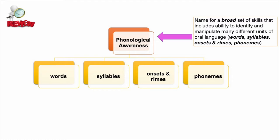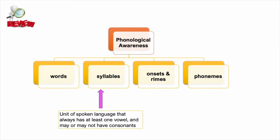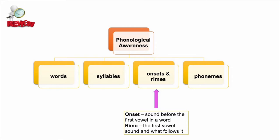Those units are words, syllables, onsets and rimes, and phonemes. A syllable always has at least one vowel and may or may not contain consonants also. Onset is the sound that comes before the first vowel in a word. In the word bat, the b sound is the onset. Rhyme is the first vowel sound in a word plus whatever comes after it. In the word bat, the at sound is the rhyme.